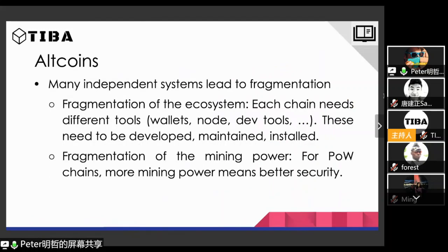The problem with all these altcoins, I would say, is fragmentation. On one side, fragmentation of the ecosystem — for each different system you need to implement wallets, nodes, developer tools, and these need to be developed, maintained, and installed. That's a lot of extra effort for a new system. And probably more importantly, it's fragmentation of mining power. If you remember, Bitcoin uses proof of work to reach consensus, and the more computational power you have, the more secure the system is. So if you break Bitcoin into two independent systems, both of them will be half as strong as the original.